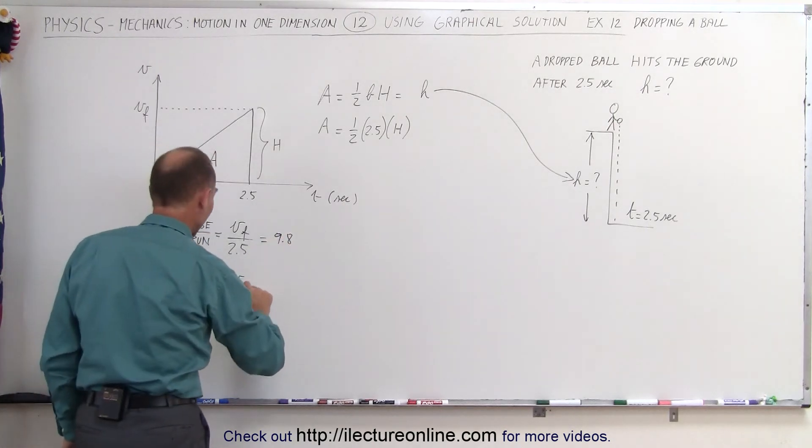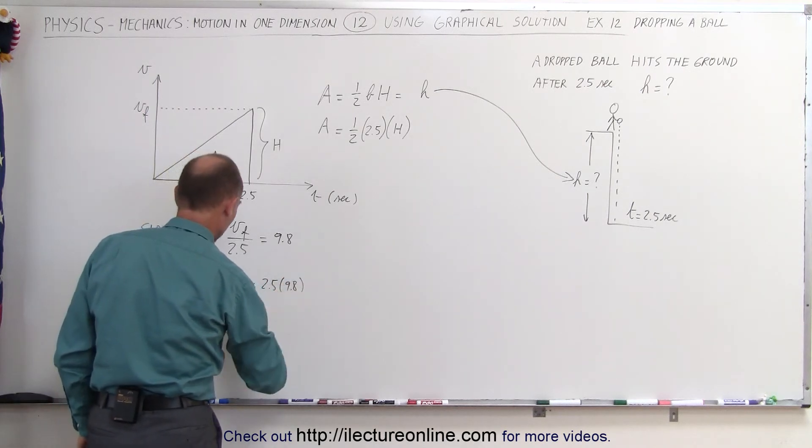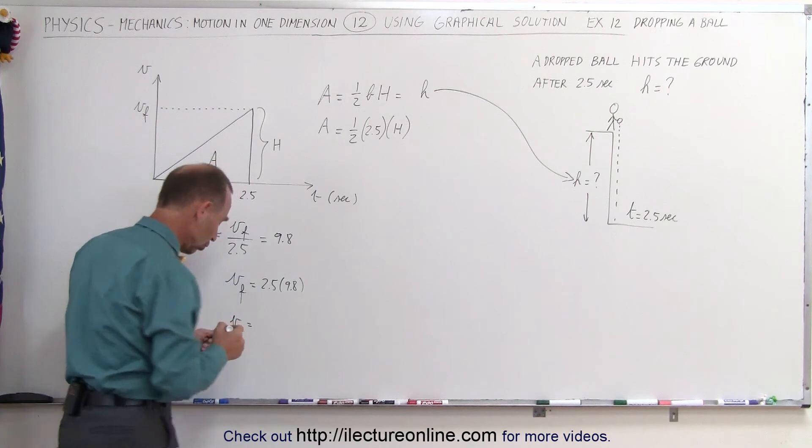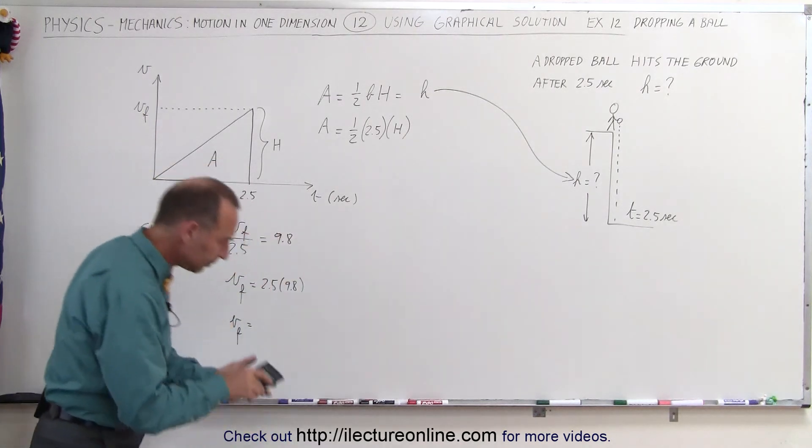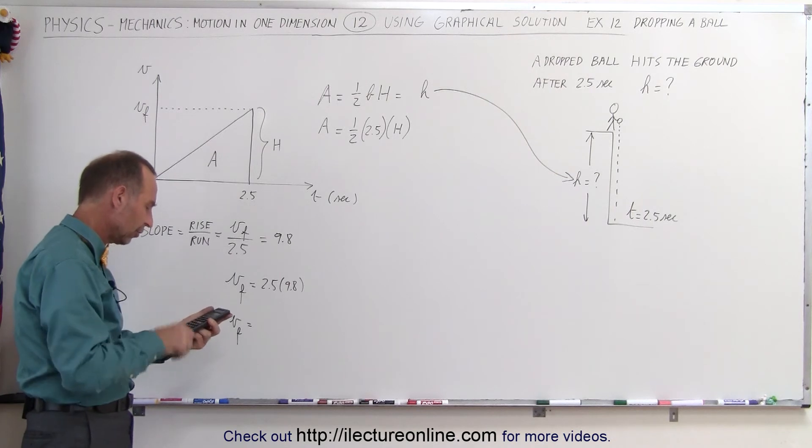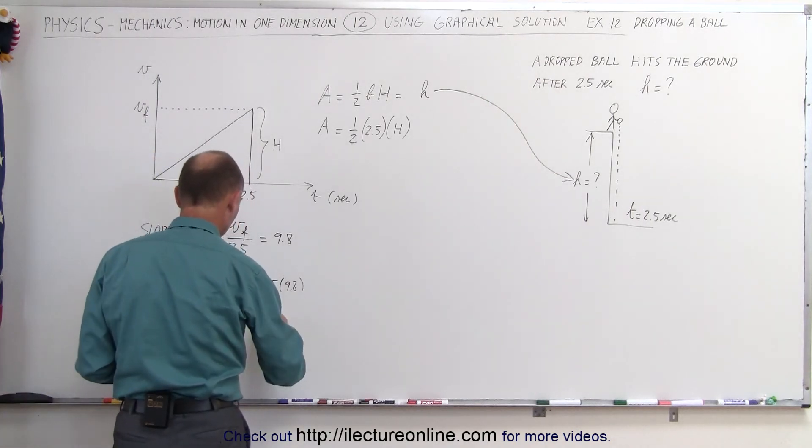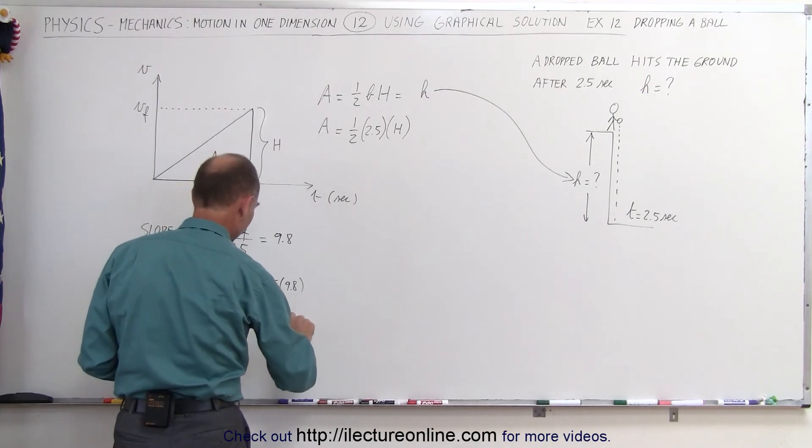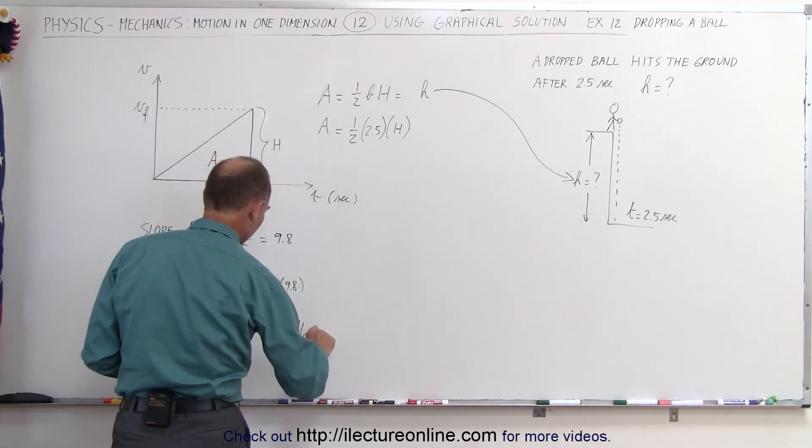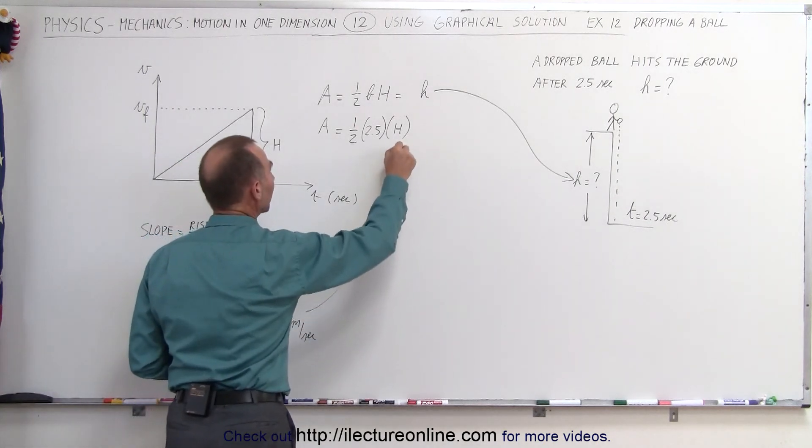This tells us that v final is equal to 2.5 times 9.8. So v final equals 24.5 meters per second. Now that we know the final velocity, we can now go in here and plug it in for the height.